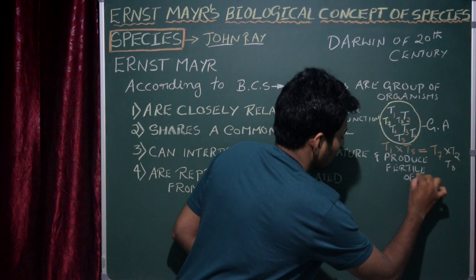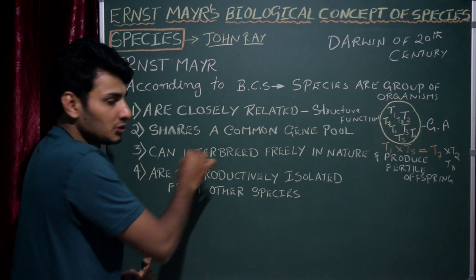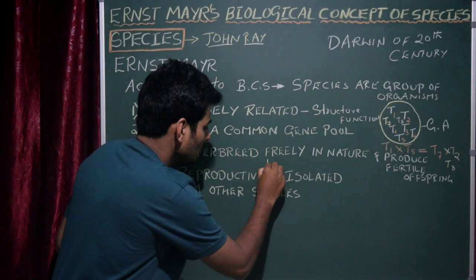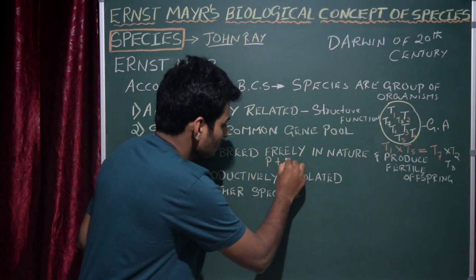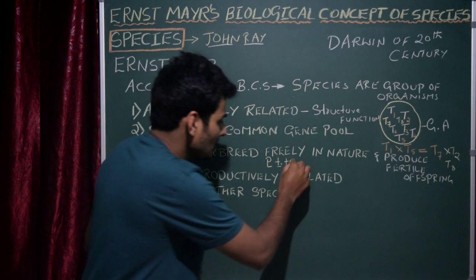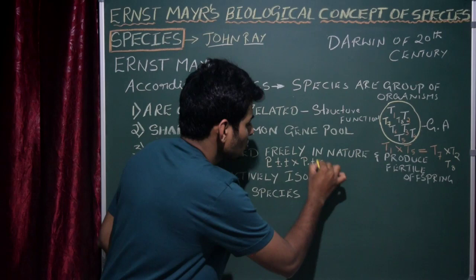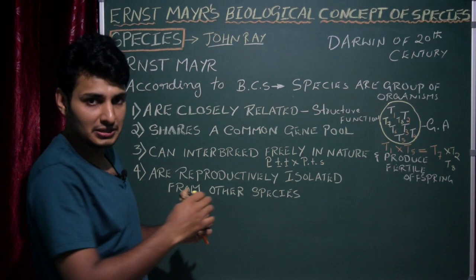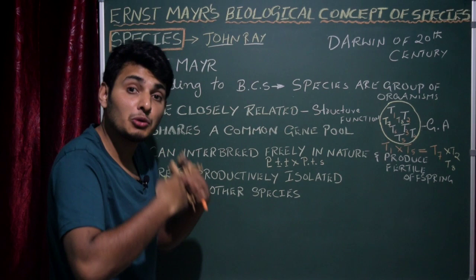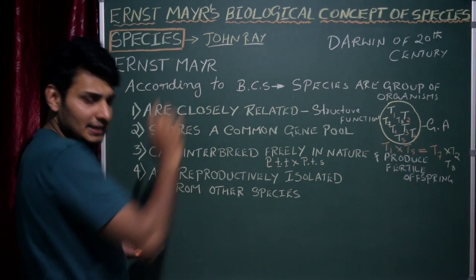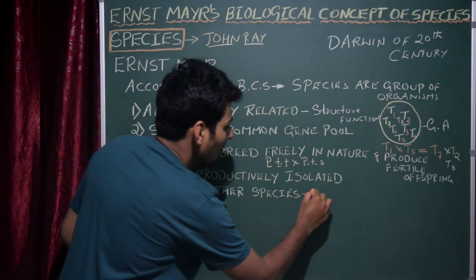For example, Panthera tigris tigris (Indian tiger) can mate with Panthera tigris sumitrae (Indonesian tiger), another subspecies of tiger, and produce a tiger. This shows species can interbreed freely in nature and produce fertile offspring. This is the third theory. Now the fourth theory is the main basis of BCS.